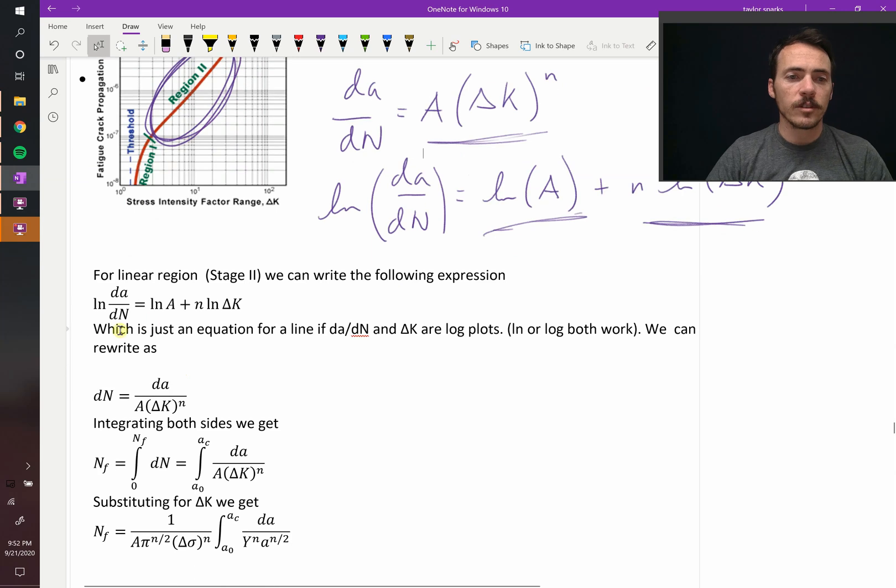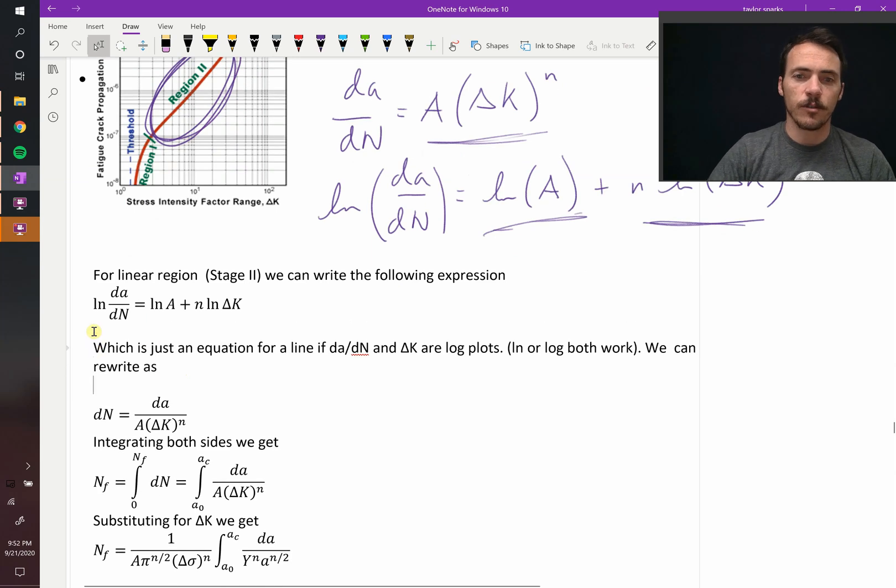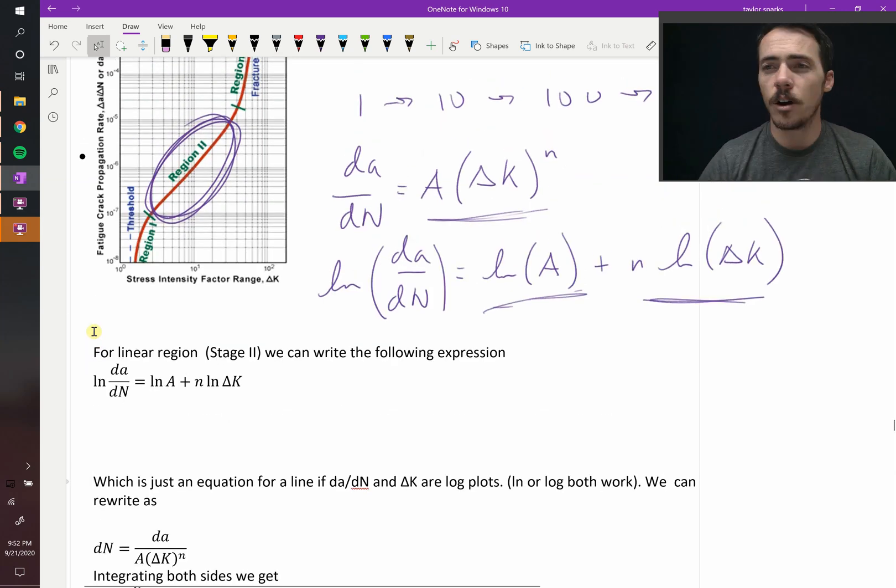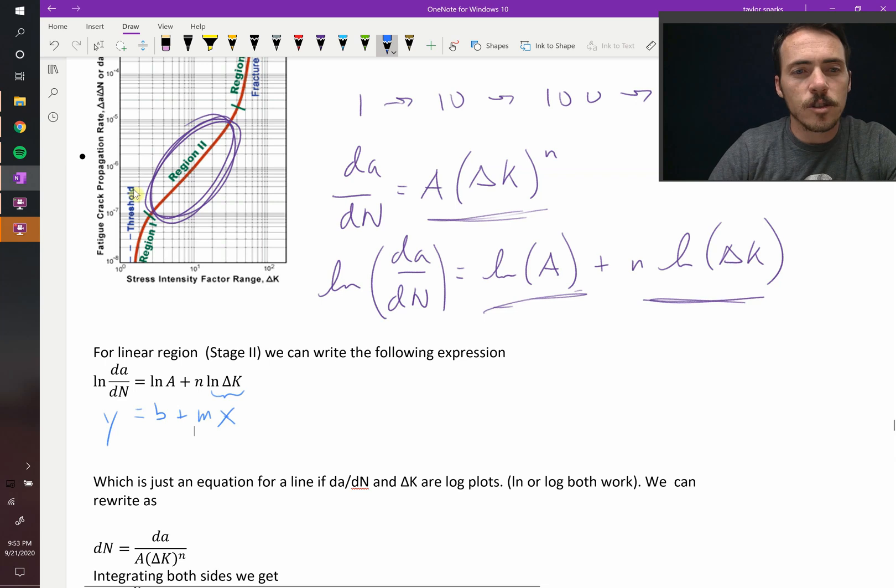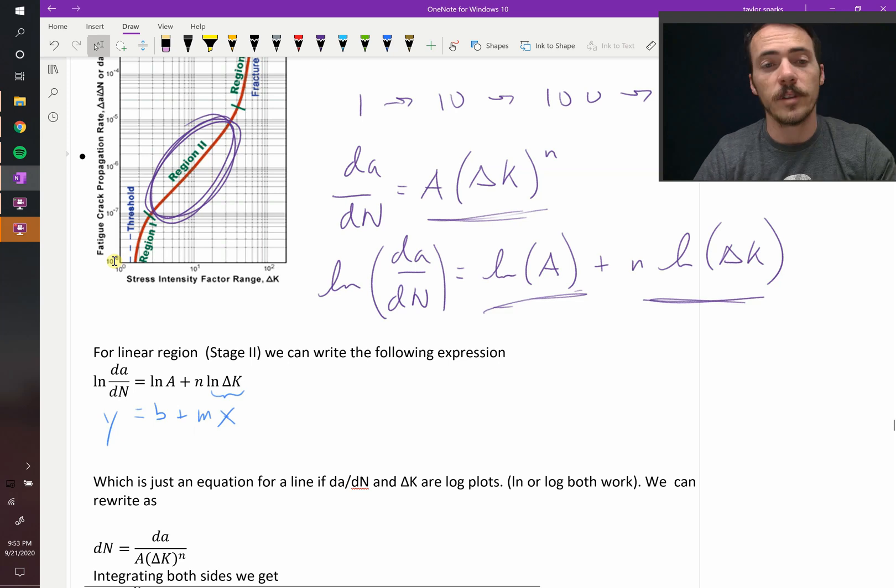That is this expression for the linear region. And if you notice, this is actually just an expression for a line if our axes are in logarithmic terms. For example, if our axes are in logarithmic, which they are for the y-axes, then this is just y equals, our x-axes, the range and the stress intensity factor, that's this guy right here. That's going to be our x. So, it's going to be a constant plus M times x. So, the slope of this line will be N, and the y-intercept down here would be the A value, well, natural log of A.